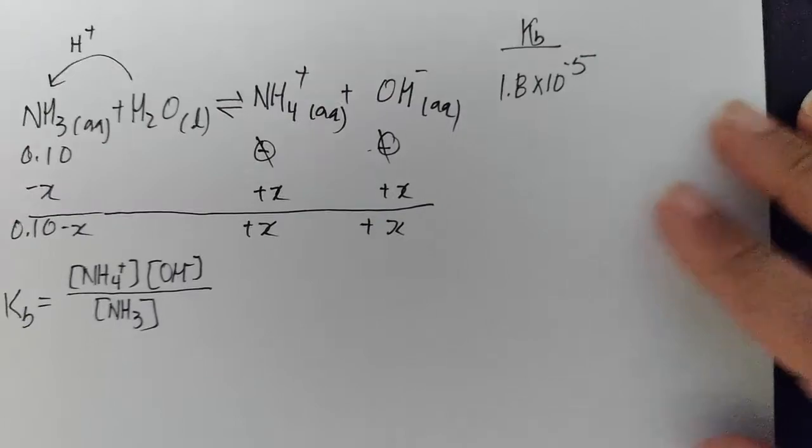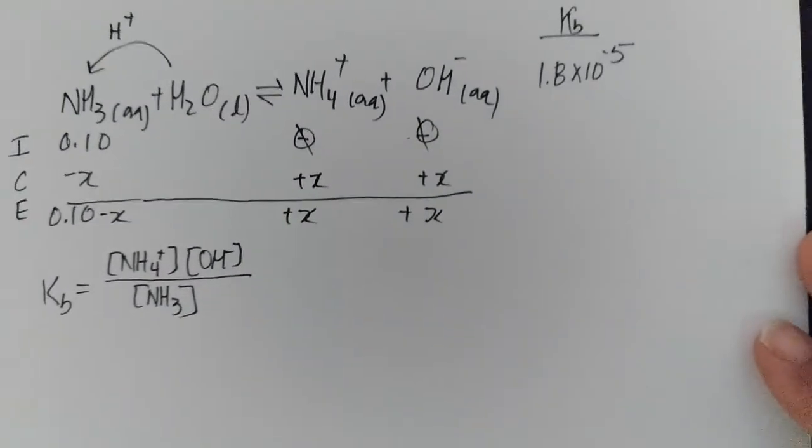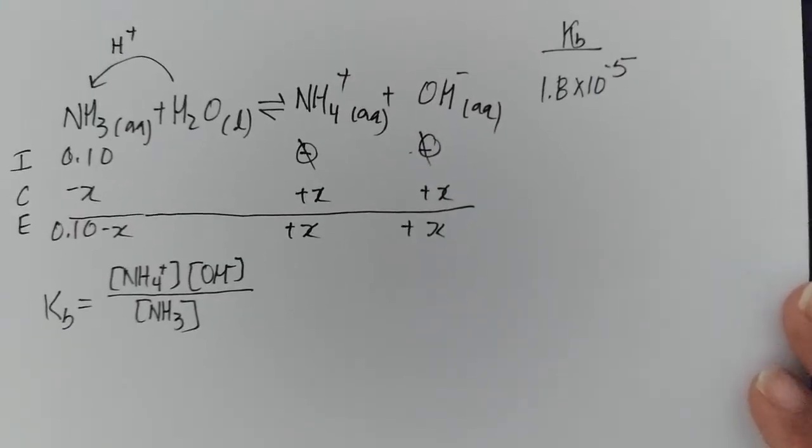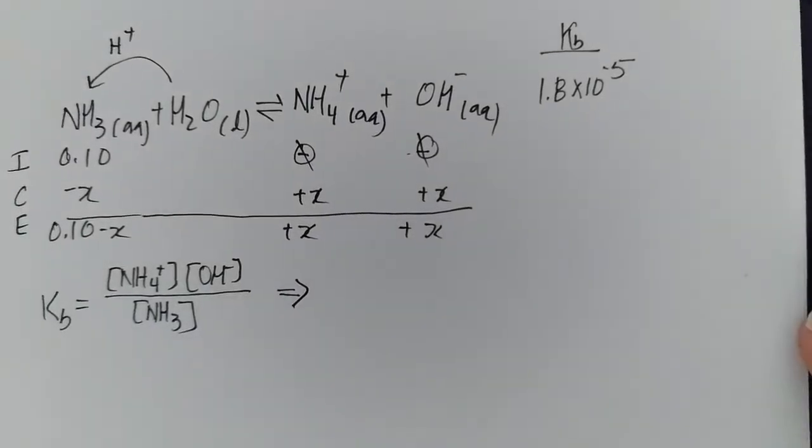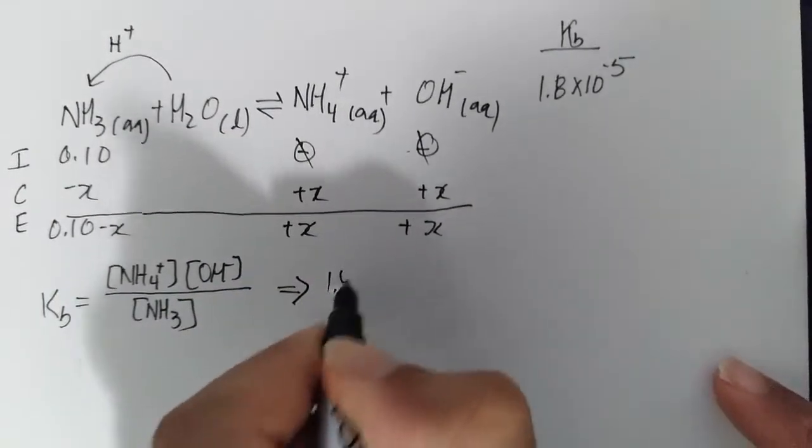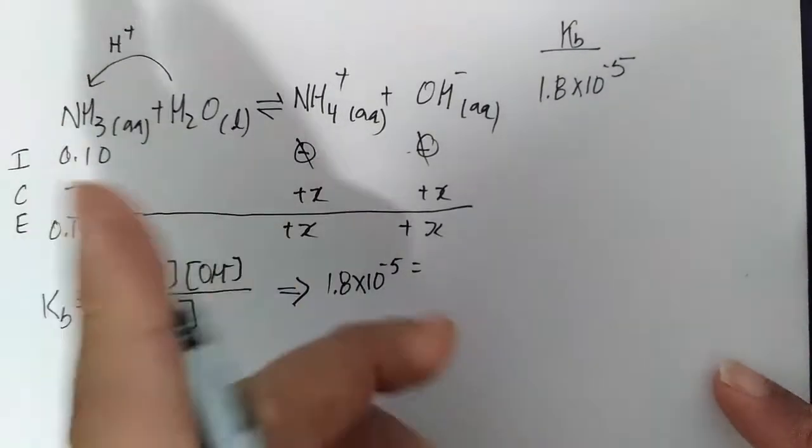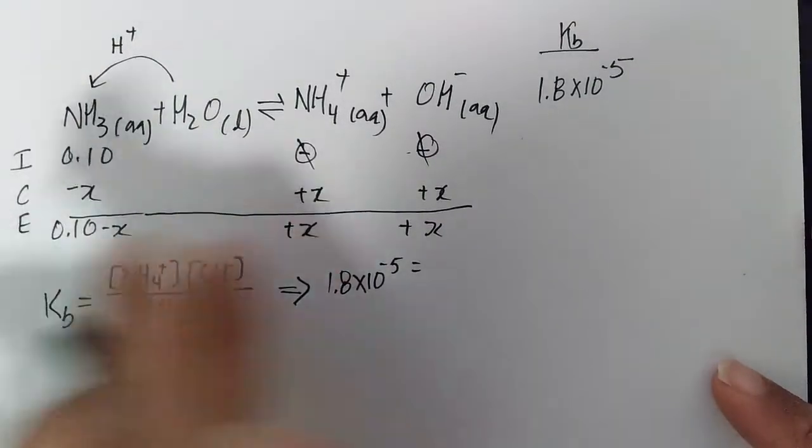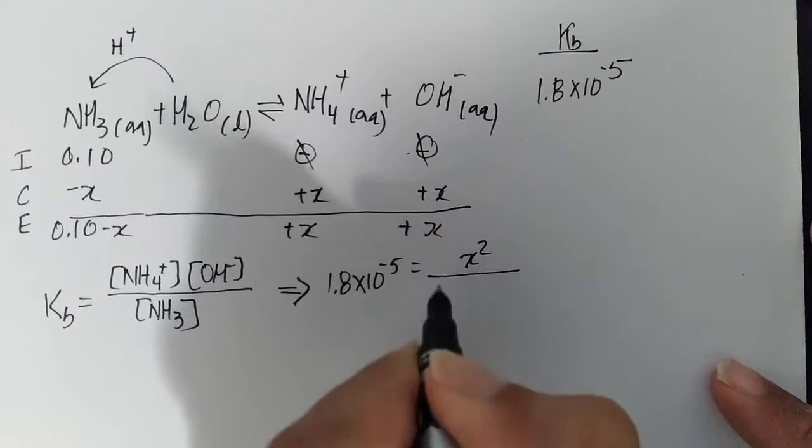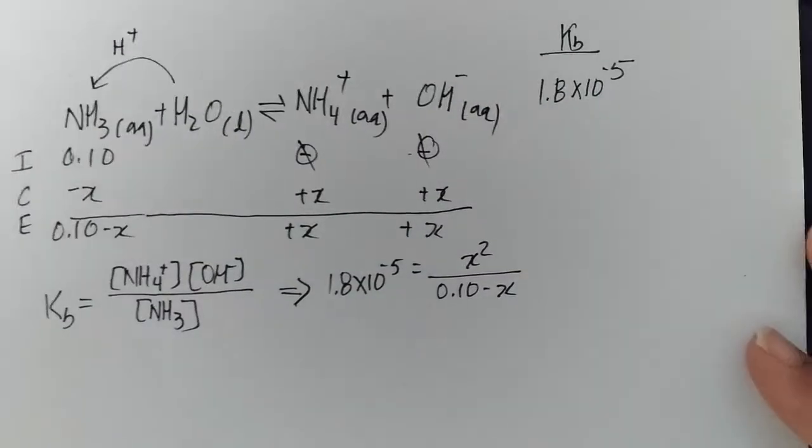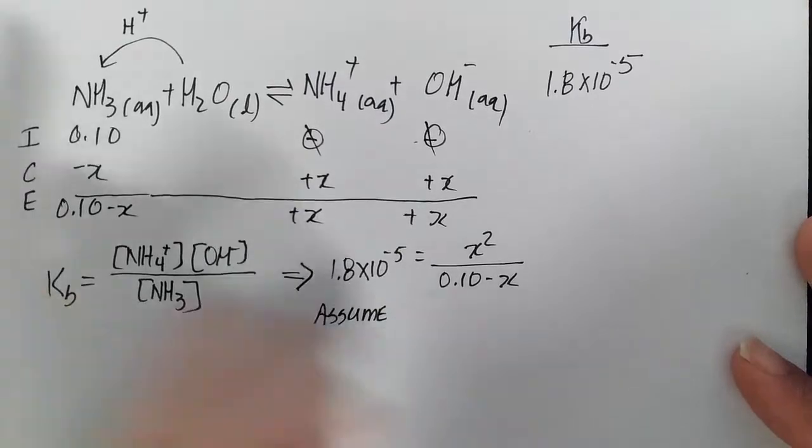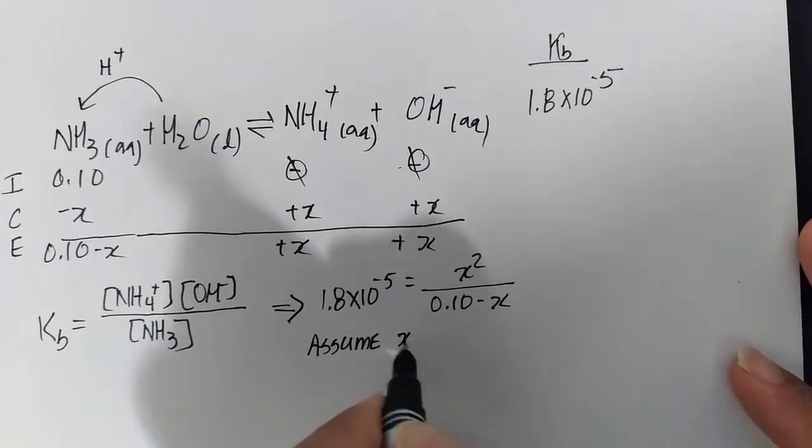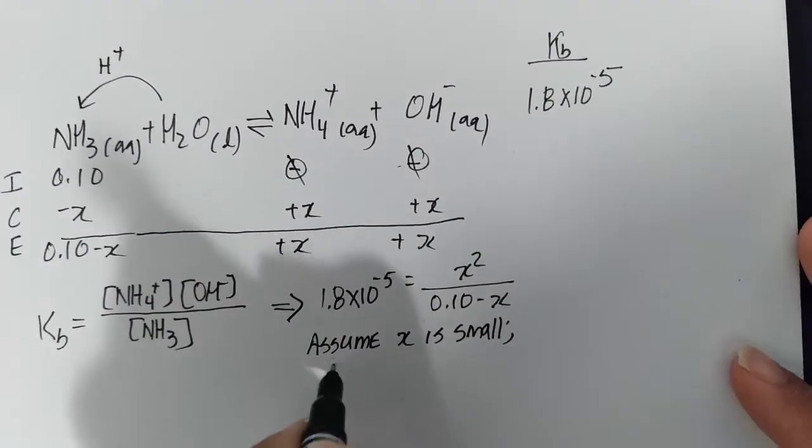I'm at a sticking point here because 1.8 times 10 to the minus 5 is not too small. So I'm wondering if I can use the ICE table or whether I can do the low ionization assumption. Let's go ahead and do the low ionization assumption after we plug in our appropriate values. If the assumption fails using the 5% cutoff rule, then we'll have to use the quadratic. Our goal is to avoid using the quadratic.